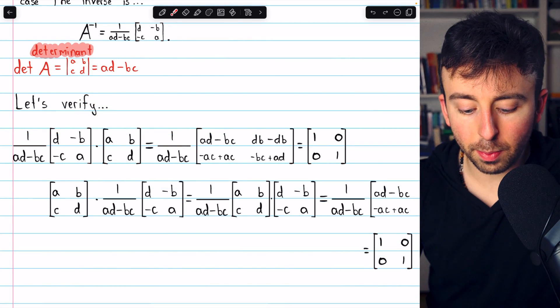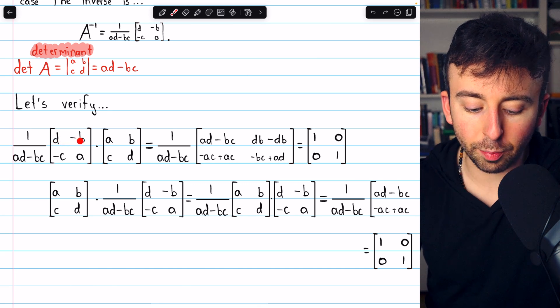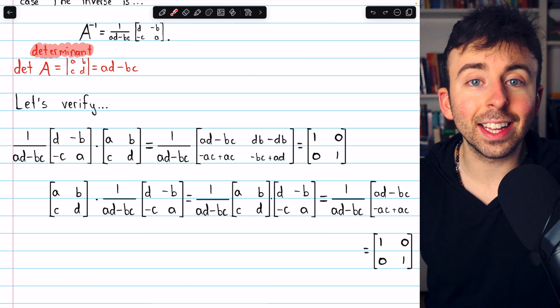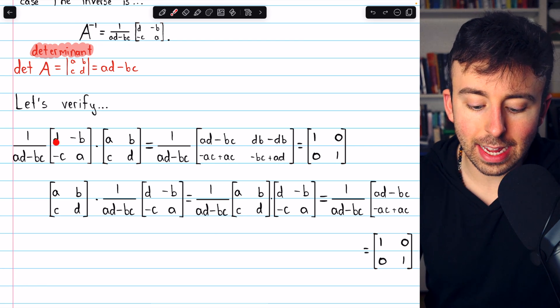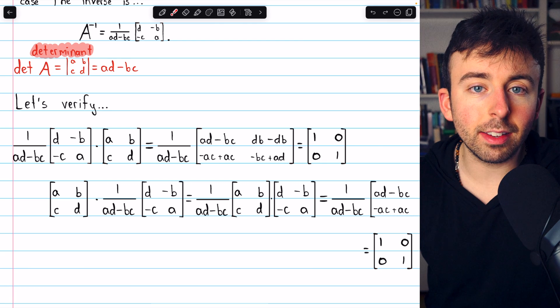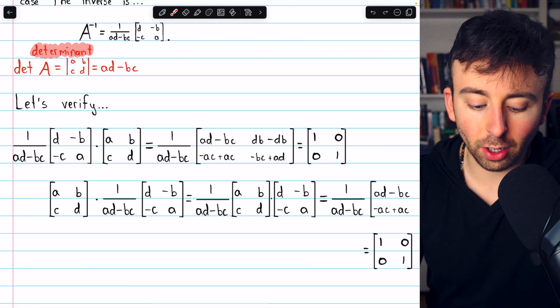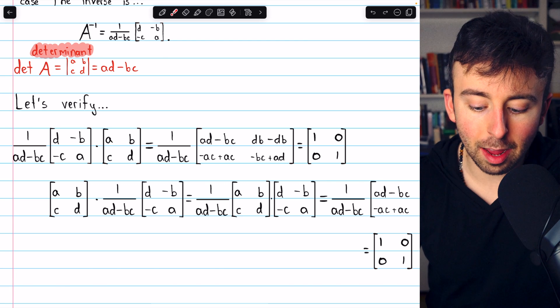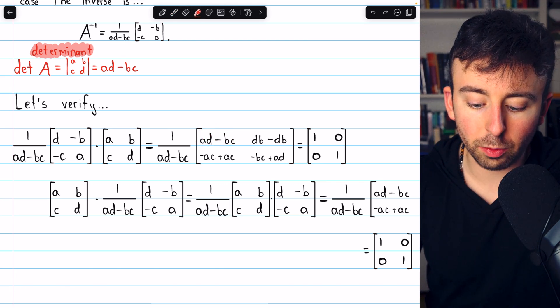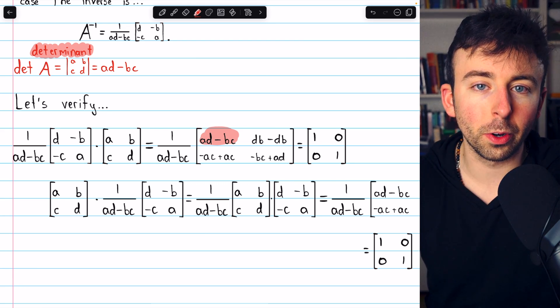Also notice, when you go through this multiplication, for example, you would begin with D and negative B being multiplied by A and C, and then adding them together. So you would have DA plus negative BC. But in each instance, I've chosen to write products in alphabetical order. So DA is the same as AD, which is why over here, you see that first component written as AD minus BC.